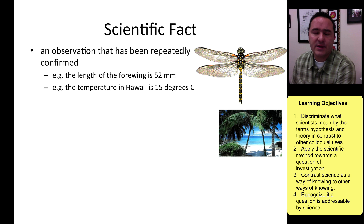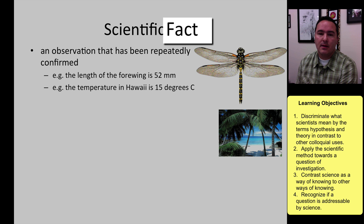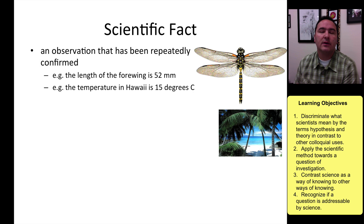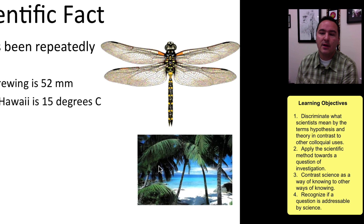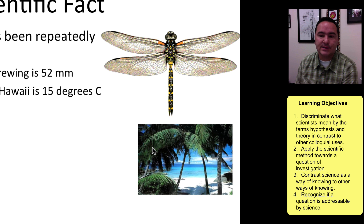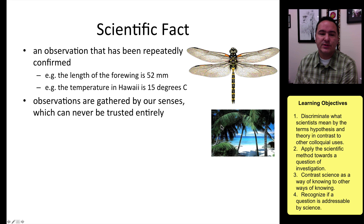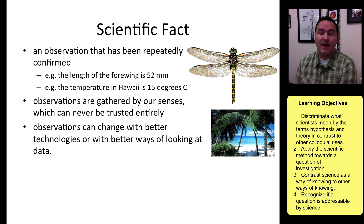Another word that is sometimes confused is 'fact.' A fact is simply an observation that can be repeatedly confirmed over and over again. For example, you can measure the length of the forewing of a dragonfly and say it's 42 millimeters long, or you can go to Hawaii and take the temperature and say it's 15 degrees Celsius. But our observations are always gathered by our senses, which cannot be entirely trusted, and observations can change with better technologies or better ways of looking at the world.